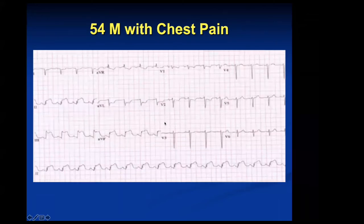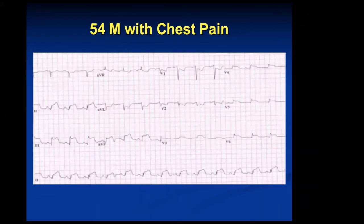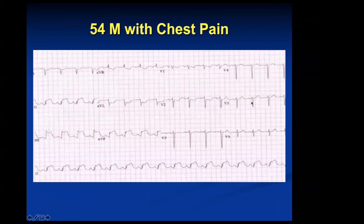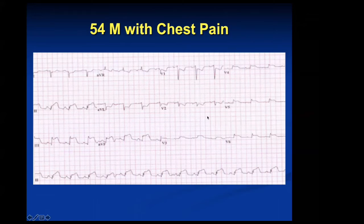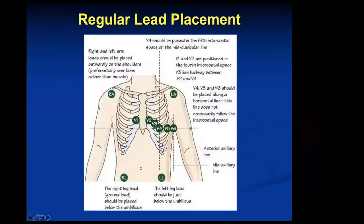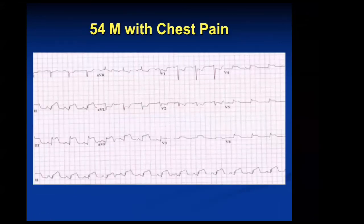This is the same EKG — the prior one versus the new one. What changes do you see? Look at the ST segments in the prior EKG compared to the new one. Do you see ST elevations in V3, V4, V5, and V6? Yes. These EKGs were done within minutes of each other, so obviously nothing else has happened. So what do these leads represent?